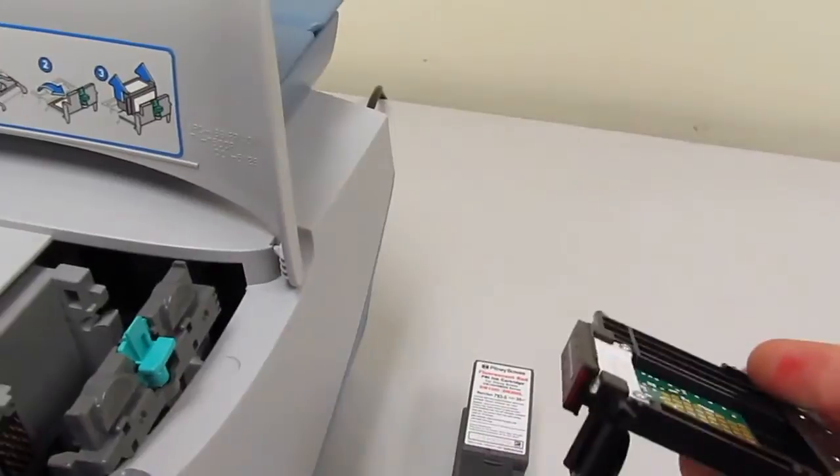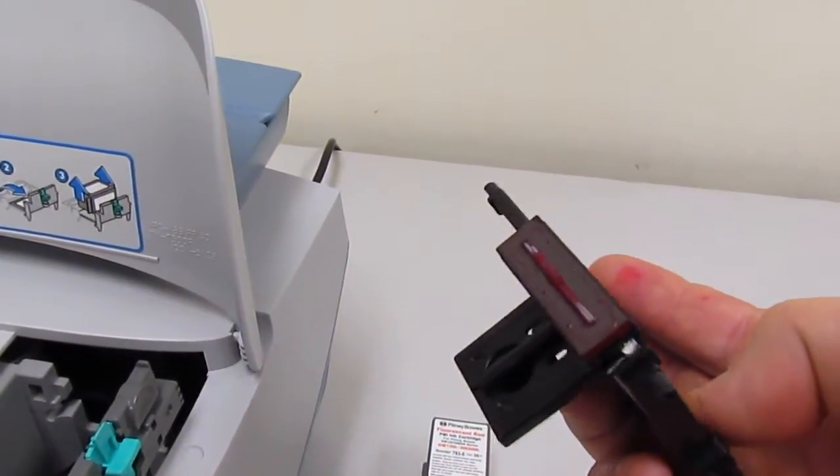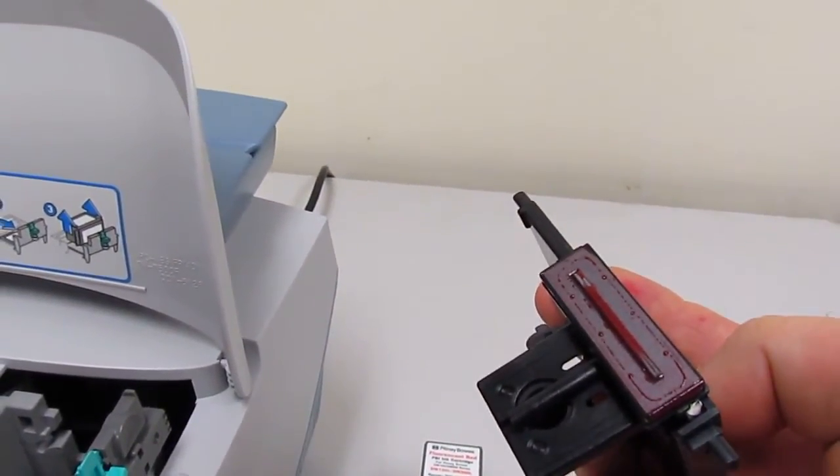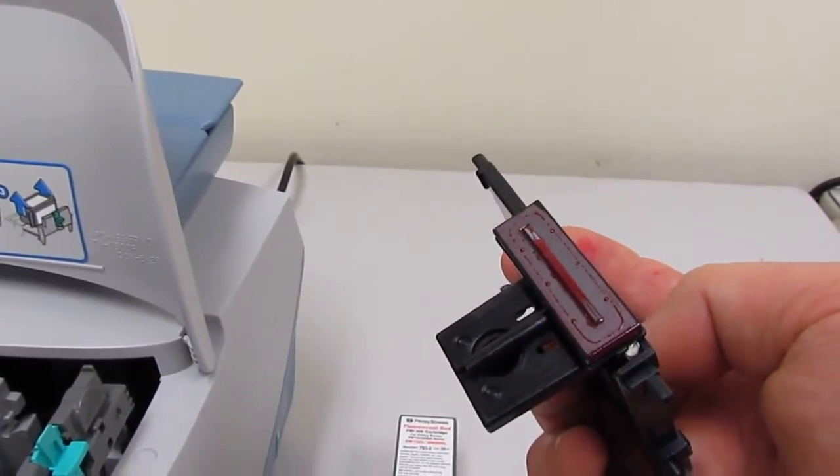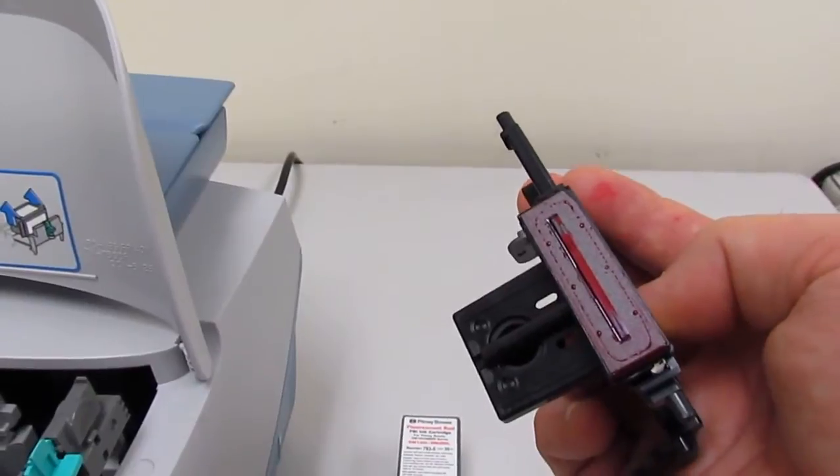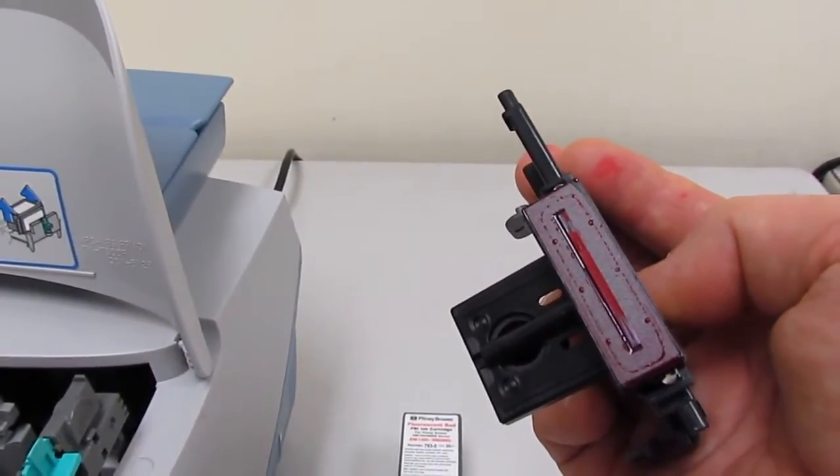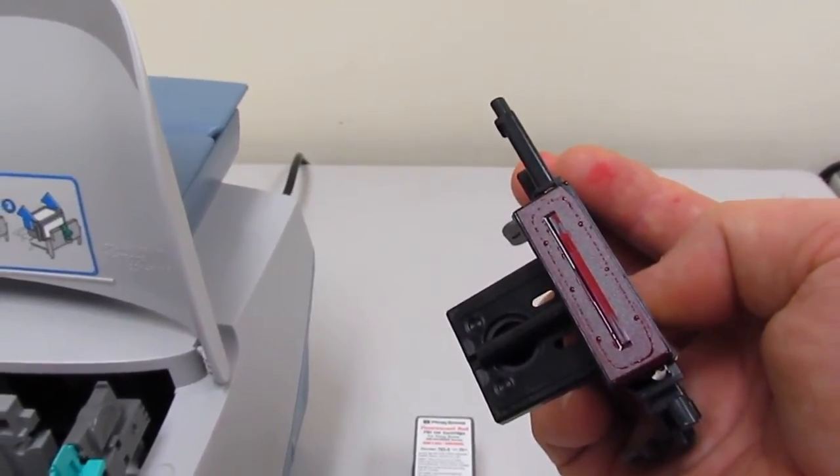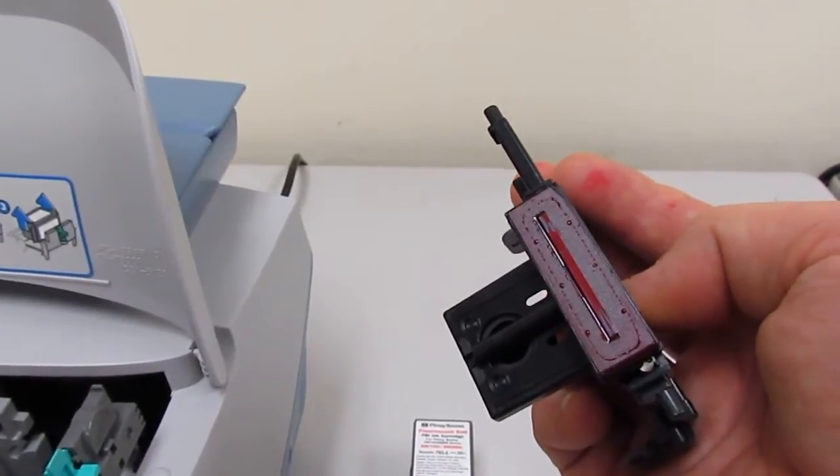The bottom of the cartridge when it's new will have a clear strip, possibly a hard shell apparatus that will cover the strip of red that you see now. So take it off first on a new printhead.